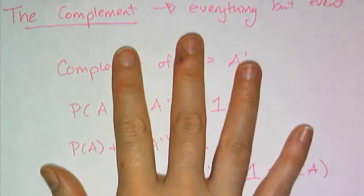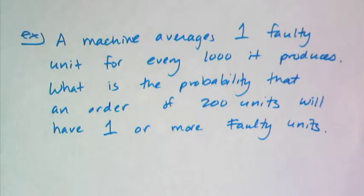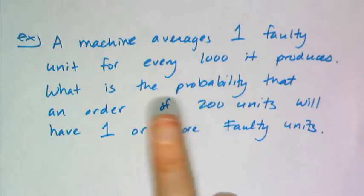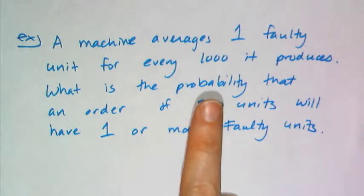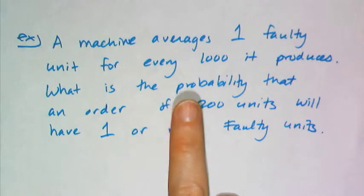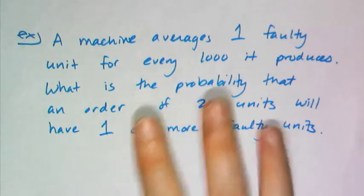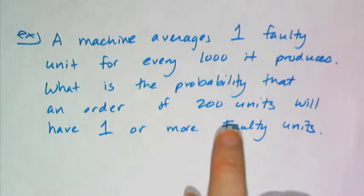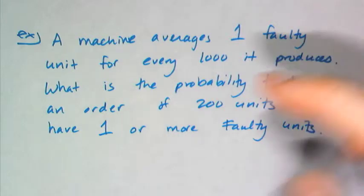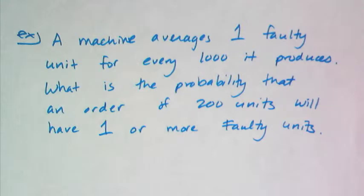This is a serious time saver. And you will see in this next example, a machine averages one faulty unit every one thousand it produces. What is the probability that an order of 200 units will have one or more faulty units. This one or more faulty units is what makes this problem annoying if you don't know about complements. Because you would have to figure out the probability that one was defective, and then two were defective, and then three were defective, all the way up to 200, and then add up all those probabilities, and then figure out that answer, which is very annoying.